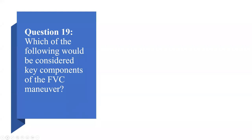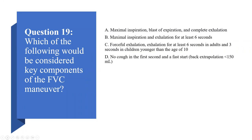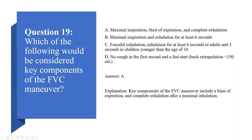Question nineteen: which of the following would be the key components of a forced vital capacity maneuver? A) Maximal inspiration, blast of expiration, and complete exhalation; B) maximal inspiration and exhalation for at least six seconds; C) forced exhalation for at least six seconds in adults and three seconds in children younger than 10; D) no cough in the first second and a fast start, also known as back extrapolation. The correct answer is A. Key components of the forced vital capacity maneuver are a blast of expiration and complete exhalation after a maximal inhalation.